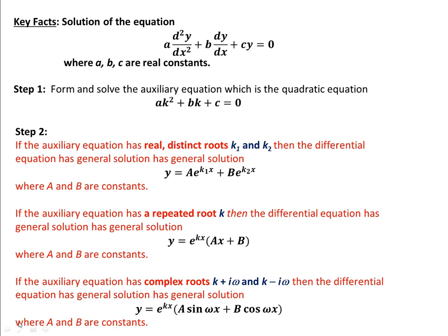If the auxiliary equation has a repeated root k, then the differential equation has a general solution y = e^(kx)·(ax + b). Finally, if the auxiliary equation has complex roots of the form k ± iω, then the differential equation will have a general solution of the form y = e^(kx)·(a·sin(ωx) + b·cos(ωx)).